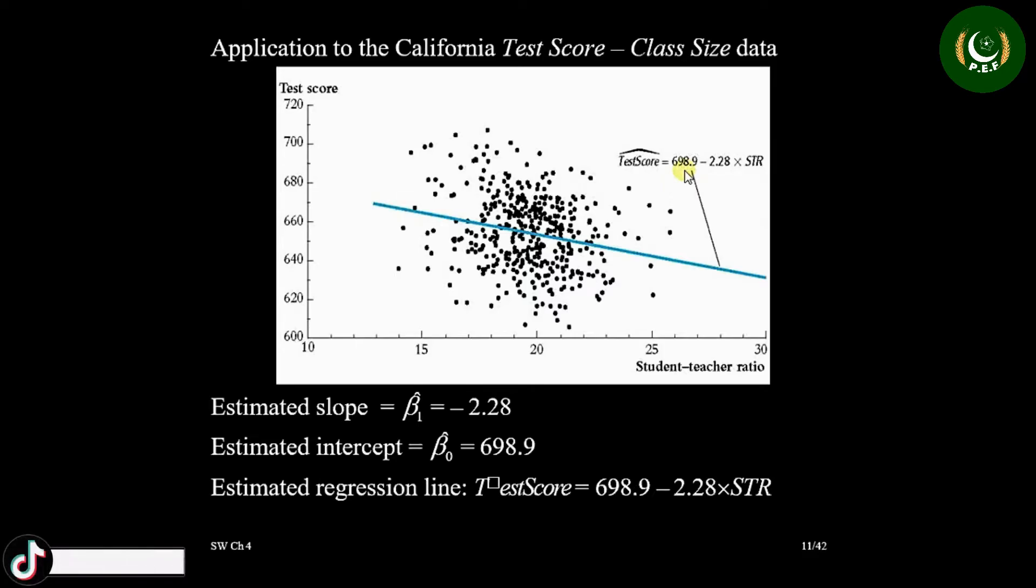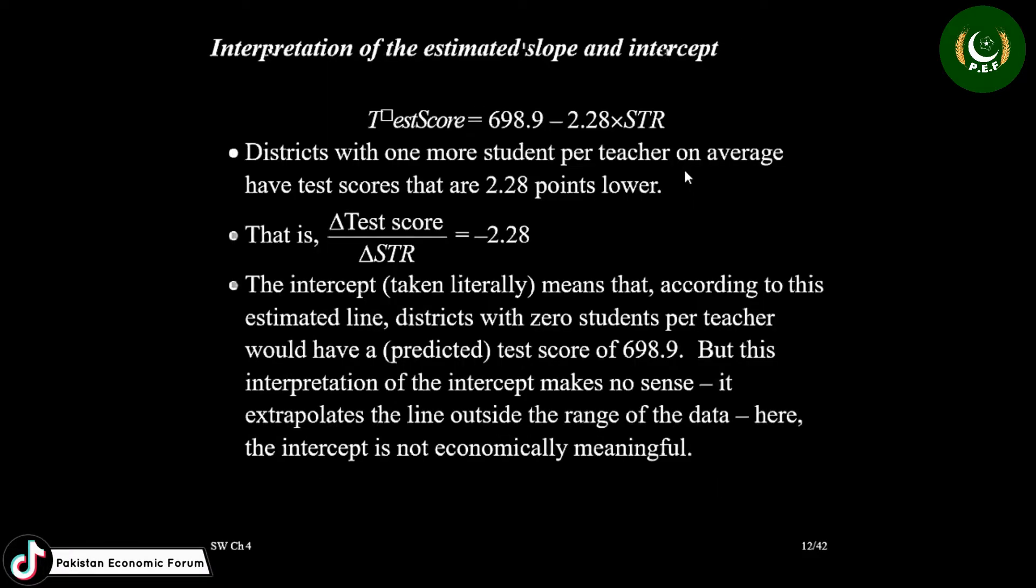If you reduce class size by one, test score of students improves by 2.28 units or in other words, if you increase class size by one, test score decrease by 2.28 units. Means smaller the class size, better test score, larger the class size, poorer the test score. Change in test score due to change in class size.